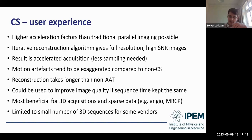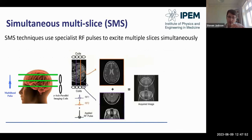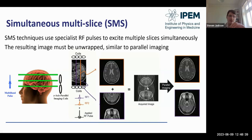Moving on to simultaneous multi-slice: SMS techniques use specialist RF pulses to excite multiple slices simultaneously. The applied RF pulse is essentially the sum of two RF pulses exciting two different slices of tissue. The RF pulses are specially adapted so that one slice reconstructs in the familiar way while the other reconstructs with a field-of-view shift, appearing as two different isolated areas of signal superimposed on each other. An unwrapping algorithm similar to parallel imaging is then used to separate them into two separate slices that can be written to DICOM and reported on.